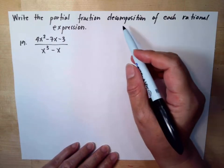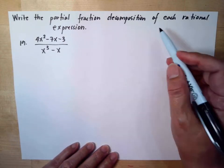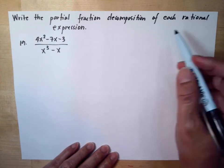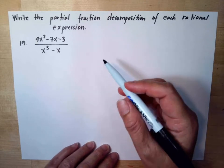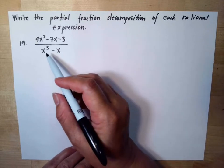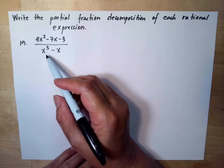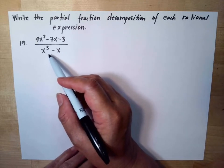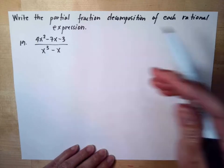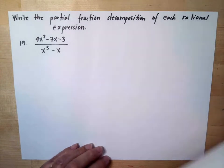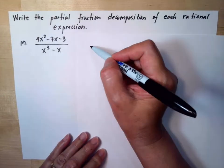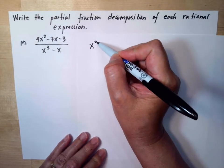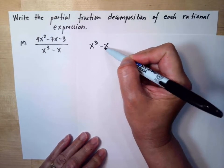Write the partial fraction decomposition of this rational expression. The first thing we will do is factor out the denominator. The denominator is x to the third minus x.